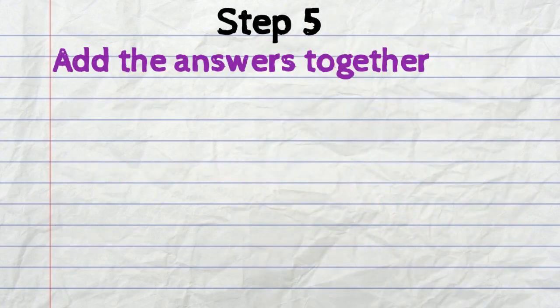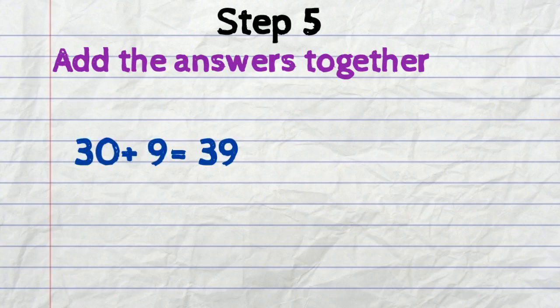And step number five. Add the answers together. So the answer to your tens and the answer to your ones. That's 30 plus 9 equals 39. That was easy wasn't it?